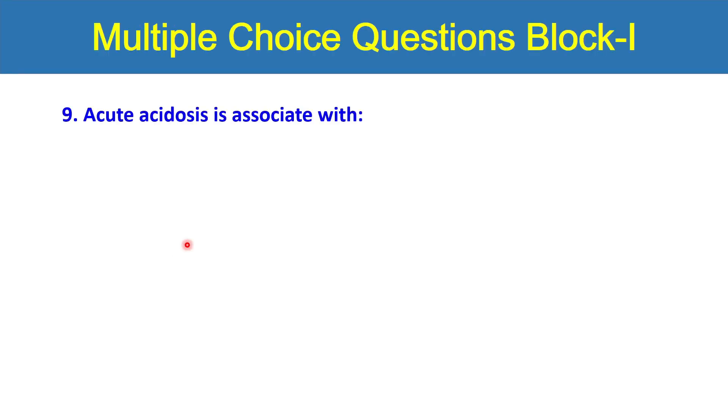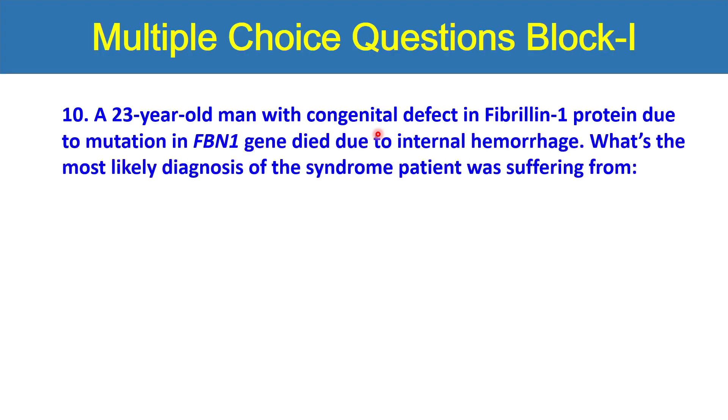Next question: acute acidosis is associated with hypokalemia, hyperkalemia, hyponatremia, hypernatremia or hypocalcemia? Next is a 23 year old man with congenital defect in fibrillin 1 protein due to mutations in FBN1 gene died due to internal hemorrhage. What's the most likely diagnosis of the syndrome patient was suffering from? Osteogenesis imperfecta, Marfan syndrome, achondroplasia, Ehlers syndrome or alopecia? Which syndrome is involved as a cause of death in this patient suffering from FBN1 gene mutations?